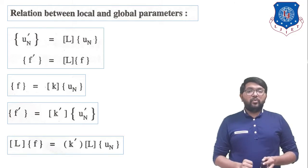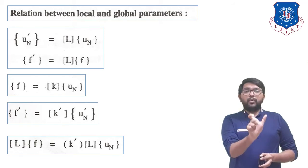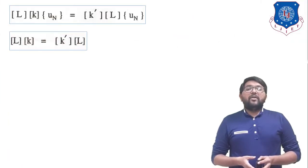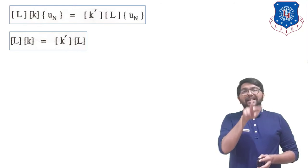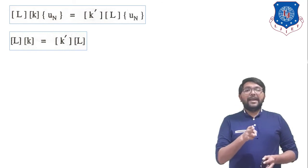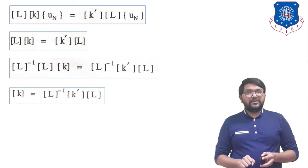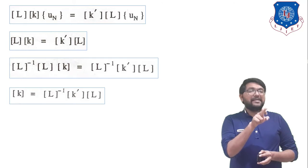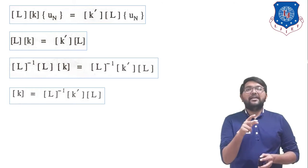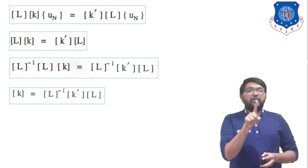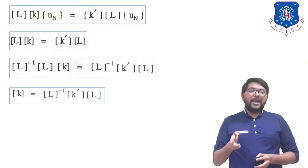Substituting F' = L·F and UN' = L·UN into F' = K'·UN', we get L·F = K'·(L·UN). Since F = K·UN, this becomes L·K·UN = K'·L·UN. Cancelling UN from both sides gives L·K = K'·L. Multiplying both sides on the left by L inverse: L⁻¹·L·K = L⁻¹·K'·L. Since L⁻¹·L = I, we get K = L⁻¹·K'·L.